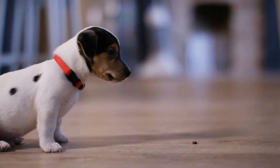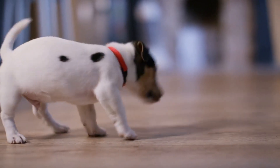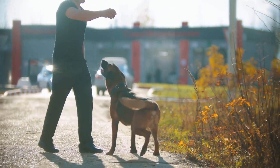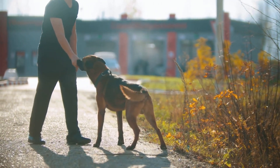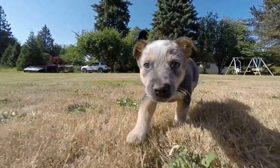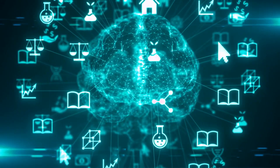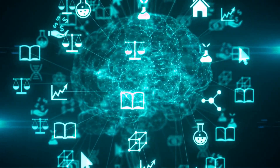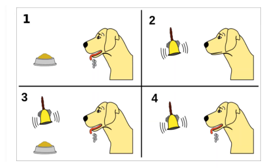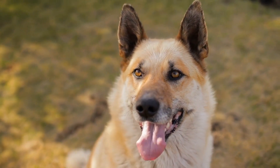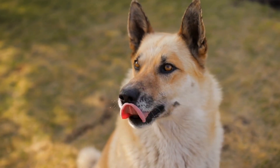Classical conditioning is a learning process that involves the pairing of a previously neutral stimulus with a natural stimulus to produce a conditioned response. Pavlov's dogs are the most famous example, and the process has been applied to many aspects of human behavior and learning. Classical conditioning has been used in various fields such as psychology, education, marketing, and therapy. It is used to explain how people develop phobias, preferences, and habits. It is also used in therapy to help individuals overcome anxiety and fear by exposing them to the conditioned stimulus without the unconditioned stimulus, a process called systematic desensitization, which involves gradually exposing the individual to the feared stimulus while they engage in relaxation techniques.